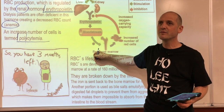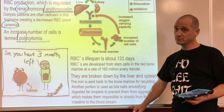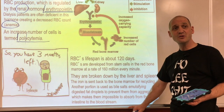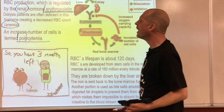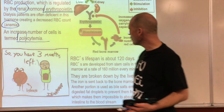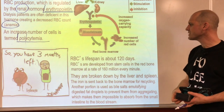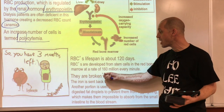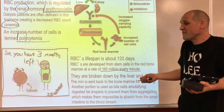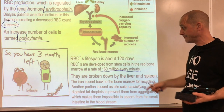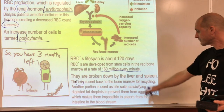Some do this artificially by taking blood out and putting it back into the body right before competition, which can be dangerous. RBCs only live 120 days - about three months. They're developed from stem cells in bone marrow at a rate of about 160 million every minute. They're broken down by the liver and spleen; the iron is recycled.